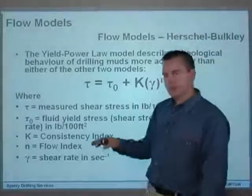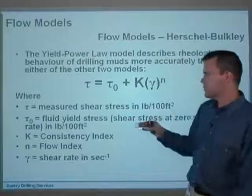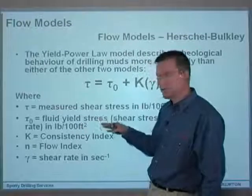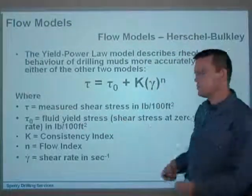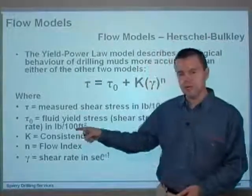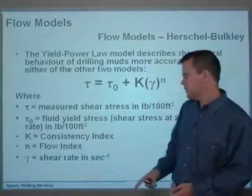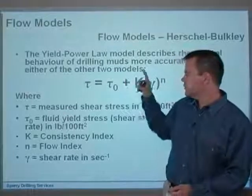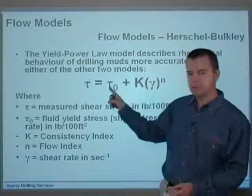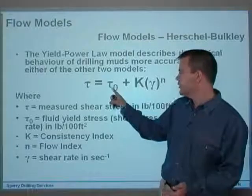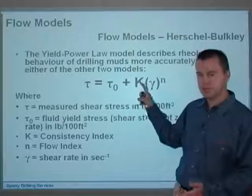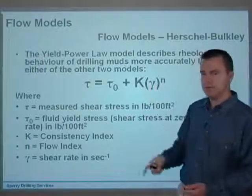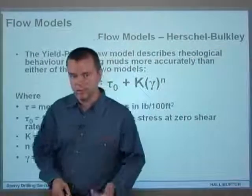Tau is the measured shear stress in pounds per 100 square feet. Tau-zero is the fluid yield stress, which is the shear stress at zero shear rate, also in pounds per 100 square feet. K is the consistency index, n is the flow index, and gamma is the shear rate in per seconds. So: shear stress equals fluid yield stress, plus K — the consistency index, or thickness of the fluid — times shear rate to the power of n, which is the flow index, or how non-Newtonian the fluid is.